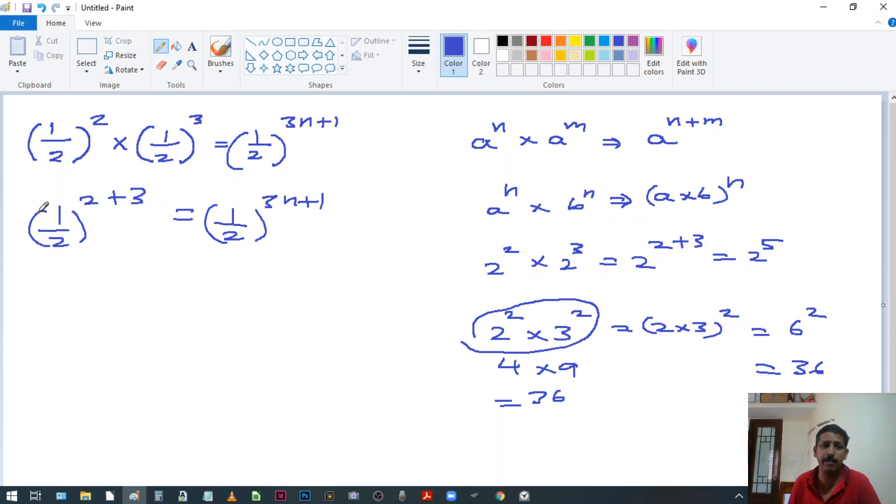Now since the bases are same on both sides of the equation, we can strike off that one. So the next thing is 5 is equal to 3n plus 1. So what is the value of n? So 3n is equal to 5 minus 1, that is 4. That is 3n. So what is n? n is 4 by 3.